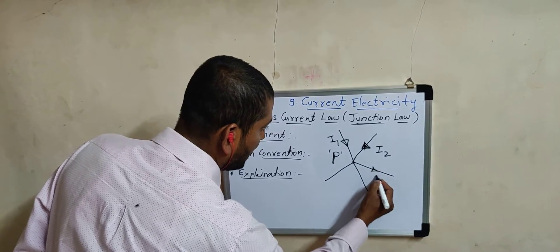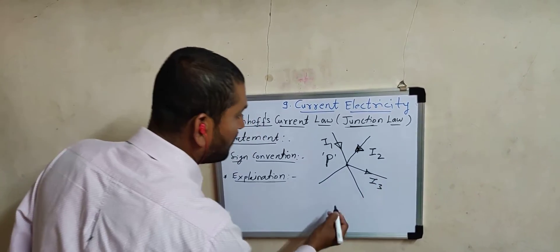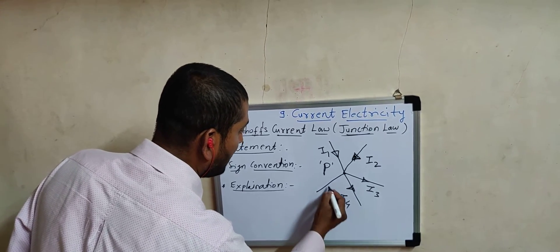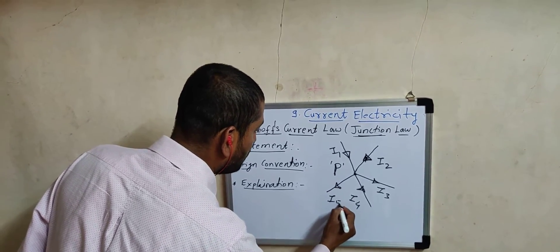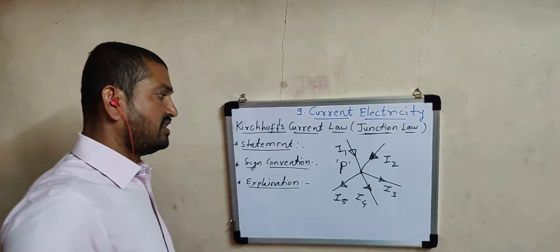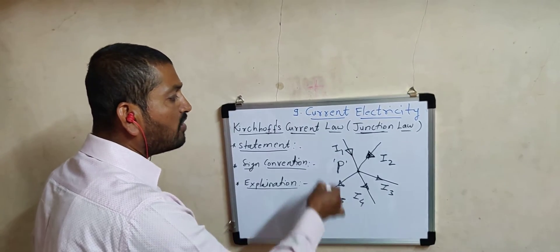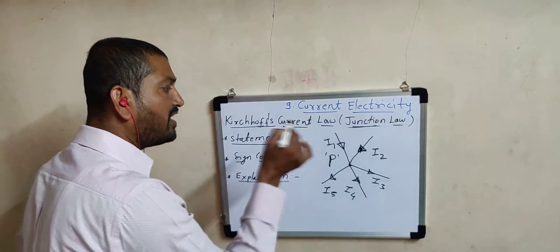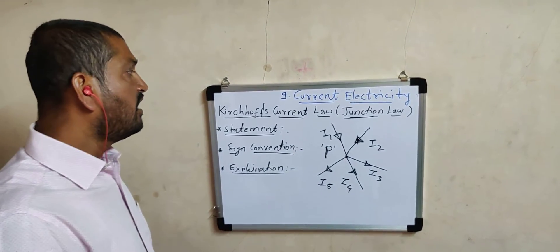The third wire carries current I3, which is going away from the junction. The fourth wire carries current I4, and the fifth wire carries current I5, and these are also going away from the junction. Kirchhoff's current law gives us an idea about current distribution at any one junction in an electrical circuit.